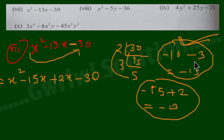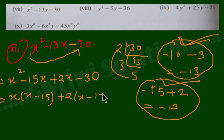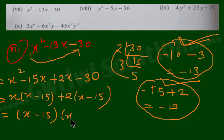The answer — please put your answer in the comment box. We will provide the direct answer. The common factor here is x. So x minus 15, and then x plus 2. The answer gives us x minus 15 and x plus 2.